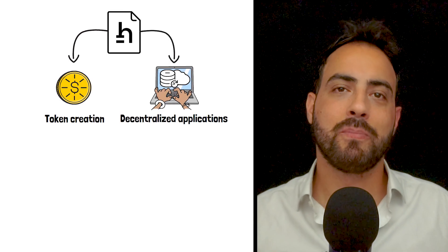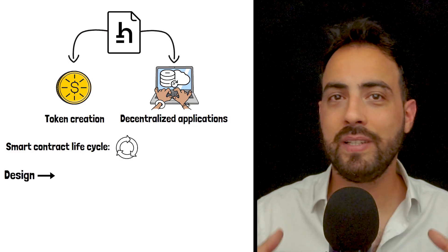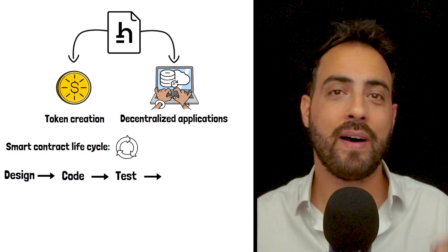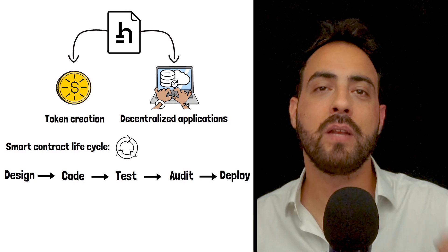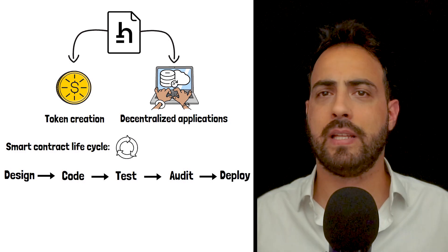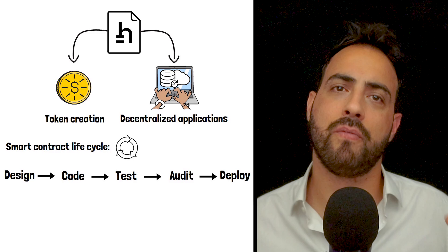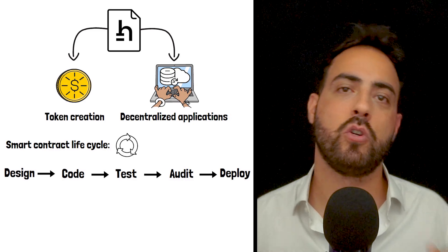To deploy a typical smart contract, first you need to design it, code it, test it, audit it, and finally deploy it to the network before it can be used. Each one of these steps requires a lot of time and effort, making the entire process complex and time-consuming.